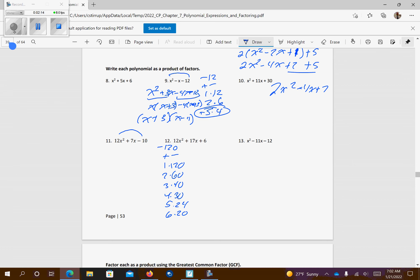7 doesn't work. 8 times, let's see, it goes in there once, 8 and 15. 8 and 15 are going to work. Okay, one's positive, one's negative, so it's positive 15, negative 8.